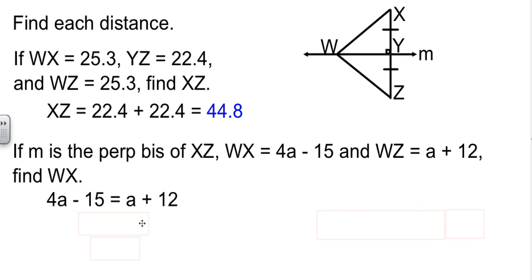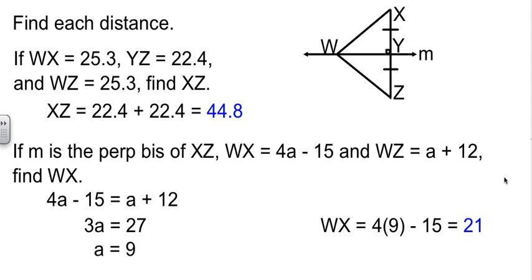Do a little equation solving, subtract things over, and add the 15, subtract the A, divide by 3, and we know what A is. They want us to find WX. Well, let's plug 9 back in to WX. 4 times 9 is 36 minus 15 is 21.